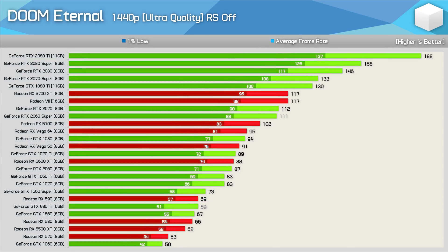Jumping up to 1440p pushes quite a few GPUs into and even just below 60 FPS. For a smoother 60 FPS-like experience, you require a 5500 XT, RX 580, or GTX 1660. For over 80 FPS on average, the GTX 1070, 1660 Ti, RTX 2060, 1070 Ti, and Vega 56 are all quite evenly matched. For the next big step up in performance, you require the RTX 2060 Super, 5700 XT, or Radeon 7. Beyond that, it's all Nvidia, with products such as the GTX 1080 Ti, RTX 2070 Super, RTX 2080, and so on.